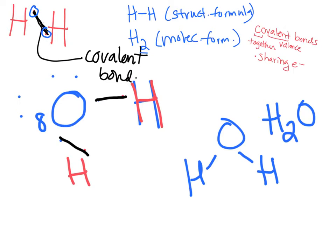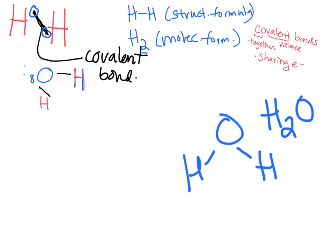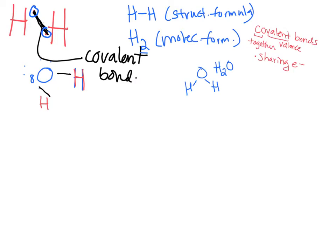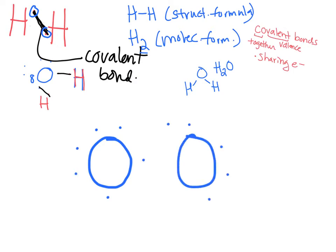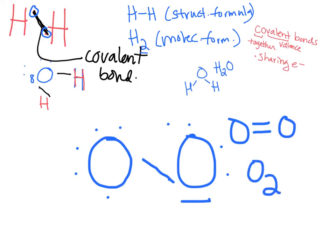Now let's look at what happens when you share electrons multiple times with the same atom. Here's our oxygen again—let's put another oxygen with it. Both need two electrons, so they can share twice, giving both full shells of eight. This is a double covalent bond, drawn with two solid lines. This is O2—the oxygen gas in the atmosphere.